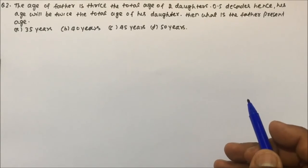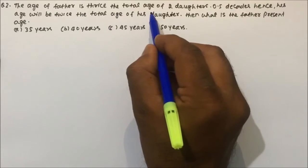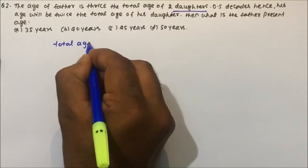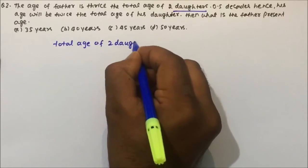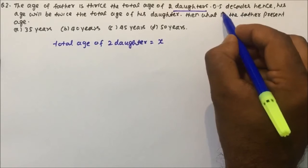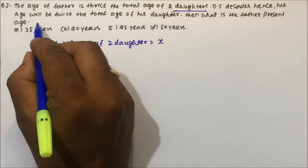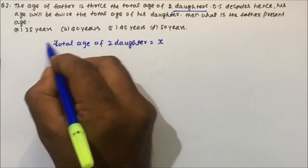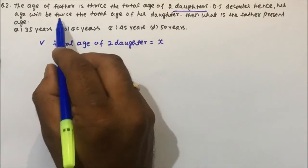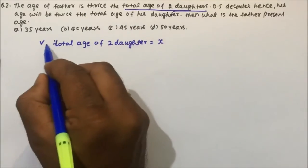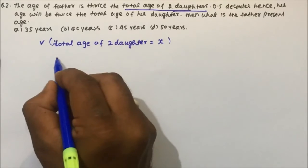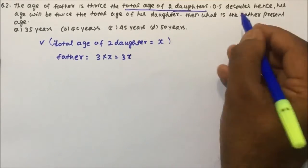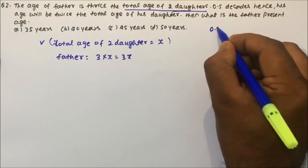Let's look at question number two. The age of a father is thrice the total age of his two daughters. Let's assume the total age of two daughters is x. So father's age will be 3x. Now, 0.5 decades hence, the father's age will be twice the total age of his daughters. We need to find the father's present age.